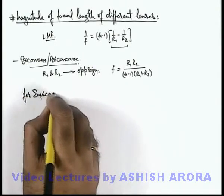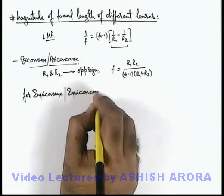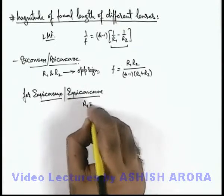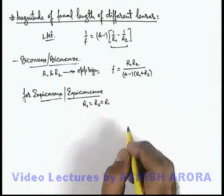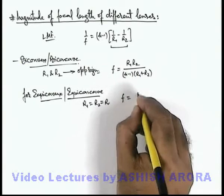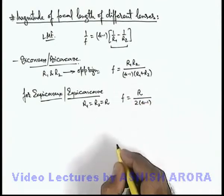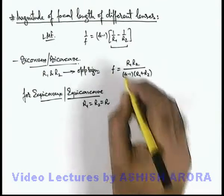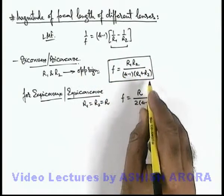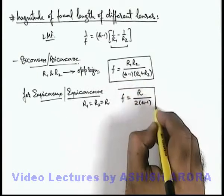For equi-convex or equi-concave lens, in case of equi-convex or equi-concave, R₁ and R₂ are equal. Say if this is equal to R, then directly from this relation we'll get the focal length as f = R/2(μ-1). This is the relation we use. As here in this expression if we substitute R₁ = R₂ = R, then this will be R/2(μ-1).